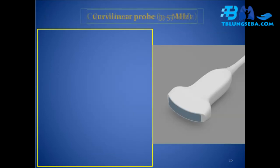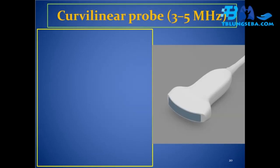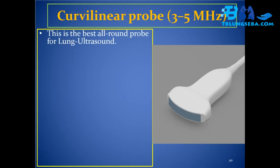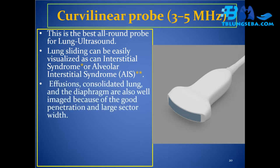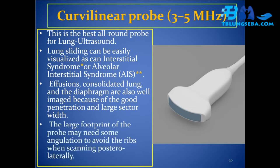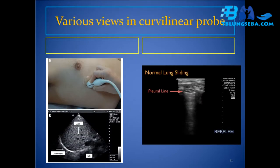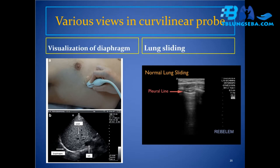Curvilinear probe (3–5 MHz): this is the best all-round probe for lung ultrasound. Lung sliding can be easily visualized, as can interstitial syndrome or alveolar interstitial syndrome (AIS). Effusions, consolidated lung, and the diaphragm are also well imaged because of good penetration and large sector width. The large footprint of the probe may need some angulation to avoid the ribs when scanning posterolaterally.